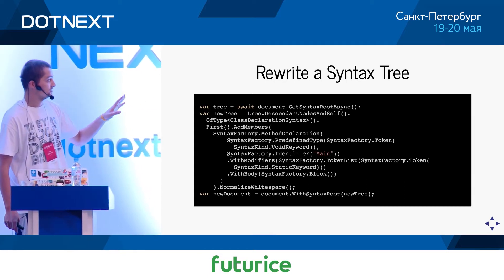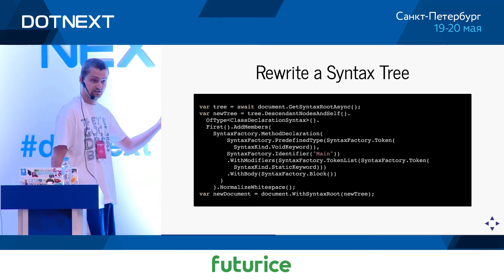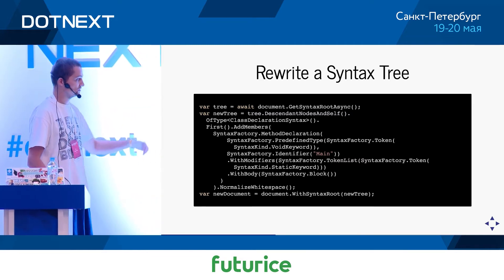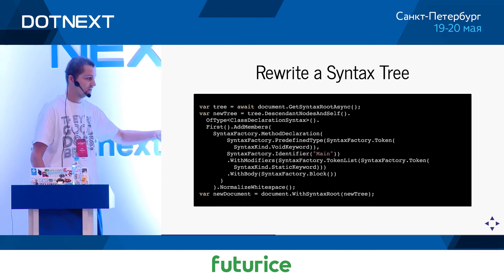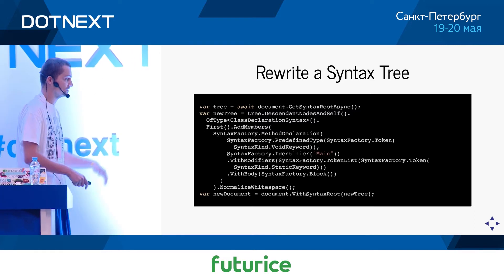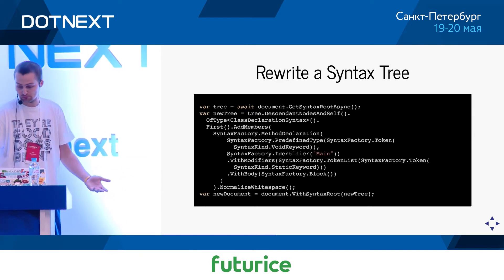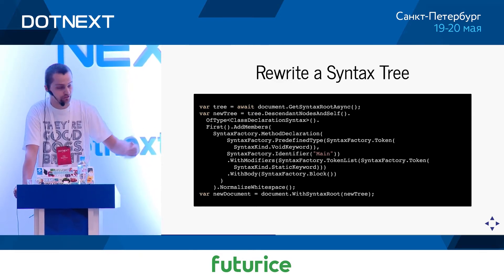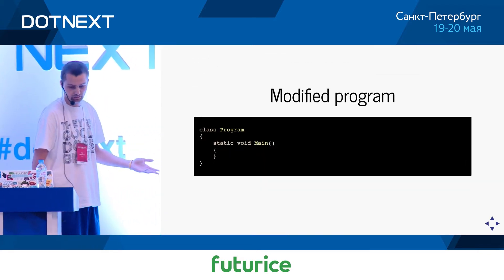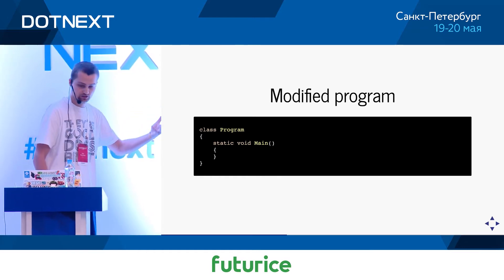An important thing about this is that syntax trees in Roslyn are immutable. By adding a new child node underneath the class declaration, we are actually creating a new syntax tree — there is no way to update an existing one. Then at the end we walk up to the document and update it with the new syntax tree, getting a new document back because documents are also immutable. Pretty much everything in Roslyn is immutable. This piece of code creates a result where we managed to add the missing method.